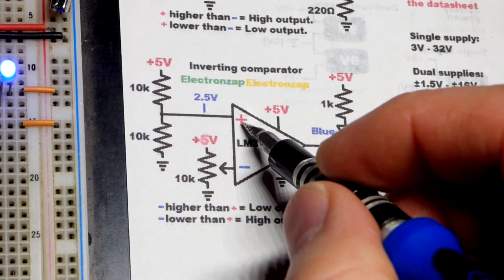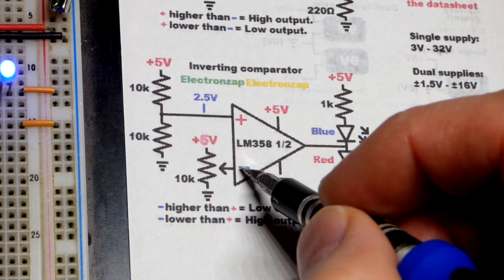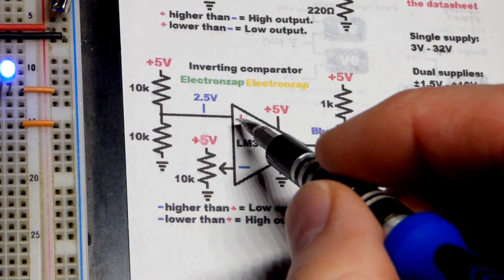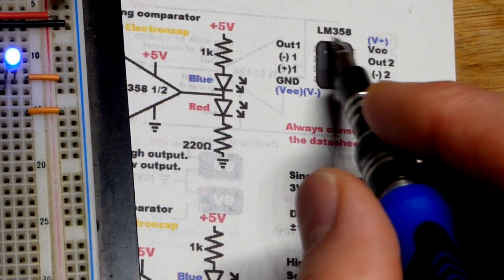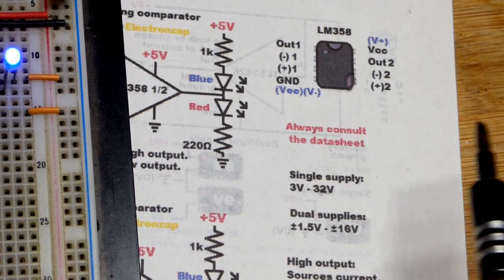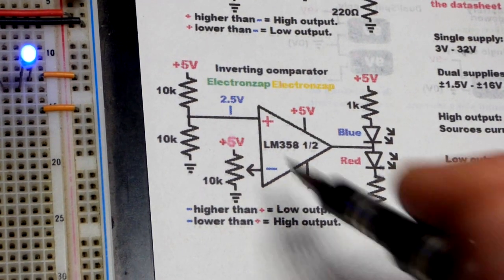When it comes to op amps, the output wants to be more like the non-inverting, the plus right here, than the inverting. Another thing I'm going to mention is on the physical component, the non-inverting input is below the inverting input for this particular op amp.